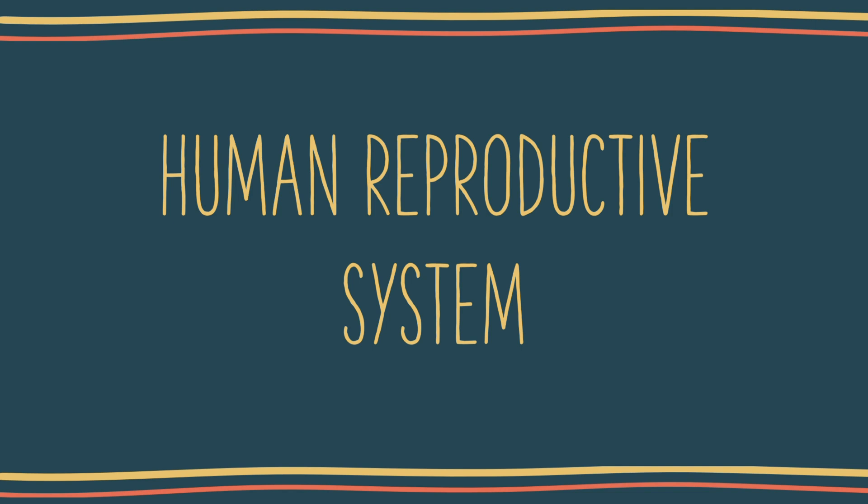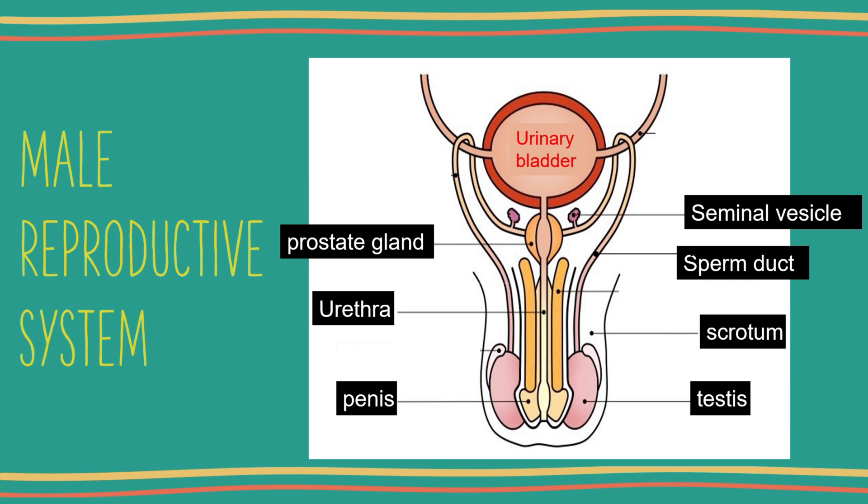What are the organs involved in the systems? Both male and female reproductive systems are very important. Married couples cannot produce offspring if any of their reproductive system malfunctions. Let us study the structure of the male and the female reproductive systems.